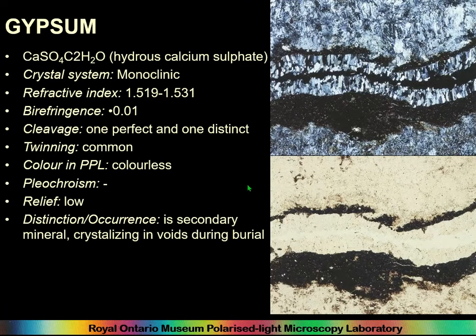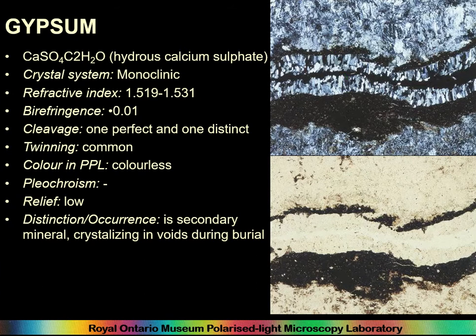Gypsum is thrown in here because it occurs as a secondary mineral in archaeological pottery. In Iraq you might find it filling a void in a piece of pottery. It's calcium sulphate with water, and its birefringence is very low — first order dark gray. If you saw a void in an Iraqi piece of pottery near where gypsum is deposited, it may look a bit like plagioclase or feldspar, but is in fact post-depositional. Watch out for that.